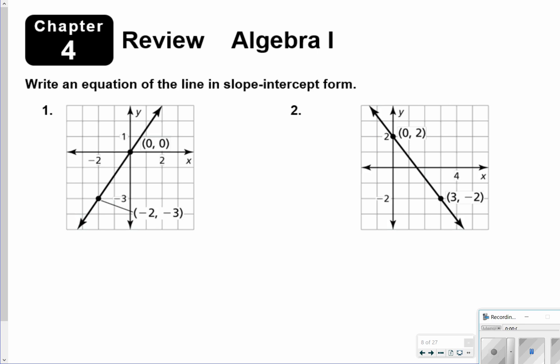Hi there, and thanks for tuning in. Today is our Chapter 4 Algebra 1 test review, so let's go ahead and get started. For questions 1 and 2, we need to write an equation of the line in slope-intercept form. Just a reminder that slope-intercept form is y equals mx plus b.